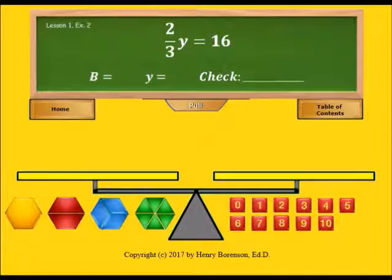We look down here and we notice that if the yellow block is the whole, each of the blue blocks is a third because three of them form the whole.